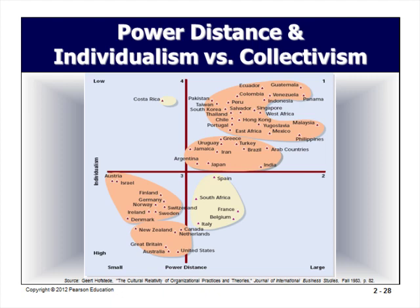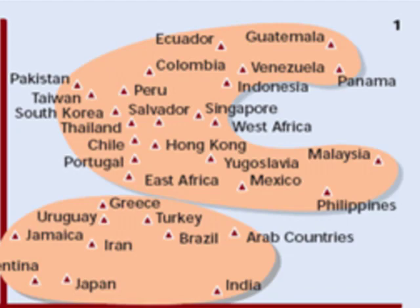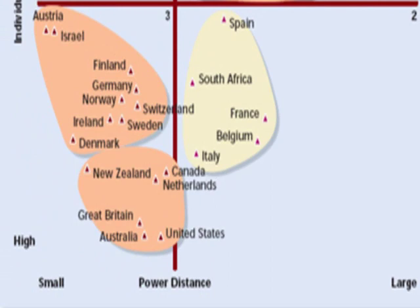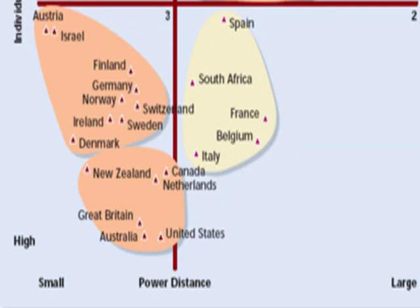A figure shows how various countries rank according to the power distance and individualism versus collectivism dimensions. There is a tight grouping of nations in five clusters. African, Asian, Central and South American, and Middle Eastern nations concentrate in quadrant one, with relatively larger power distance and lower individualism. By contrast, quadrants two and three comprise mostly Australia and the nations of North America and Western Europe, which have the highest individualism scores and many had relatively smaller power distance scores.